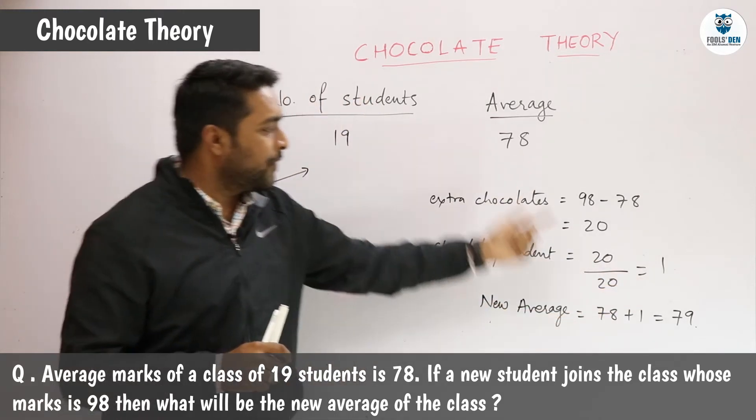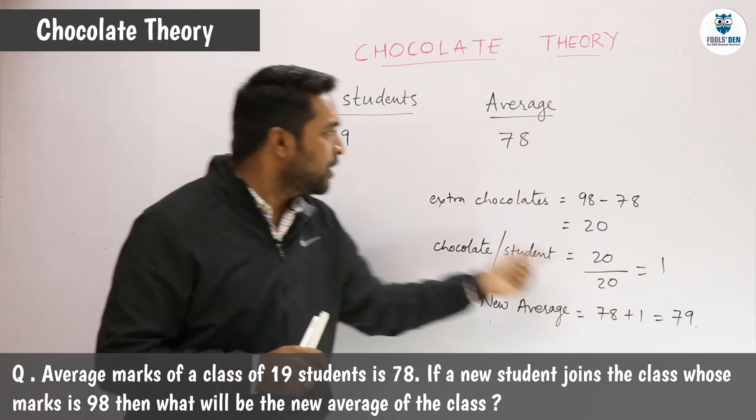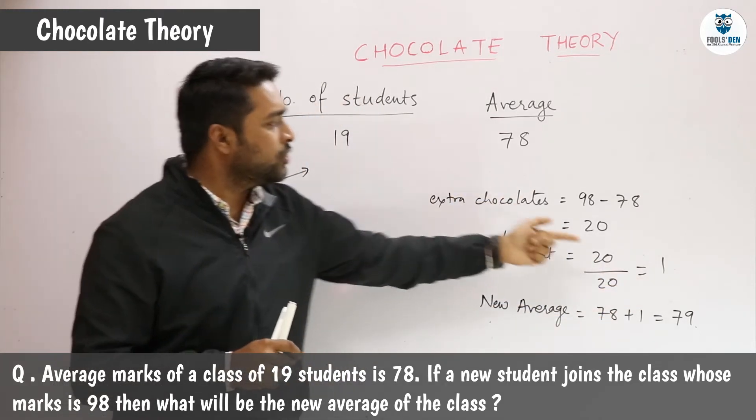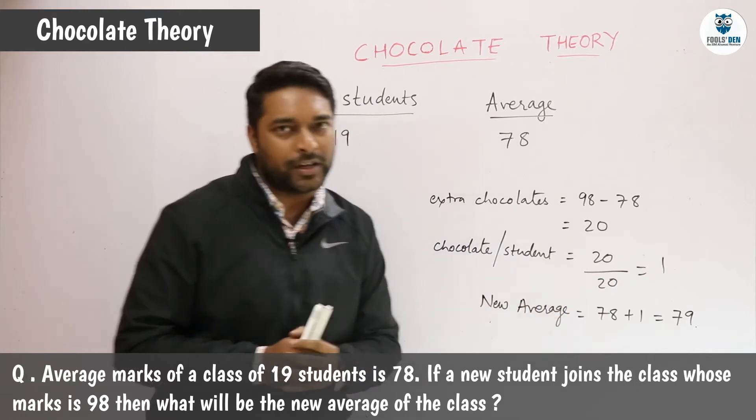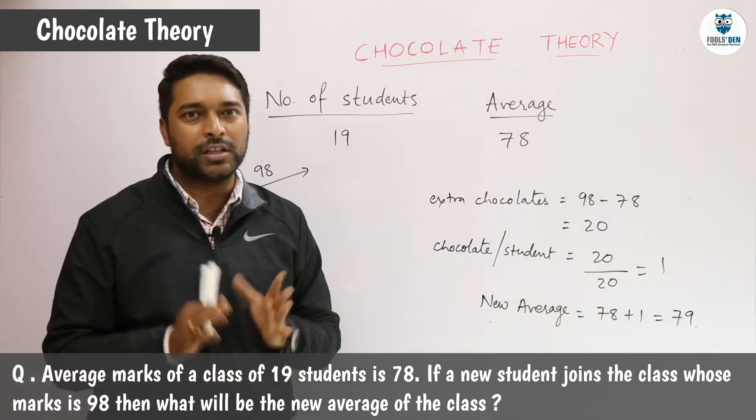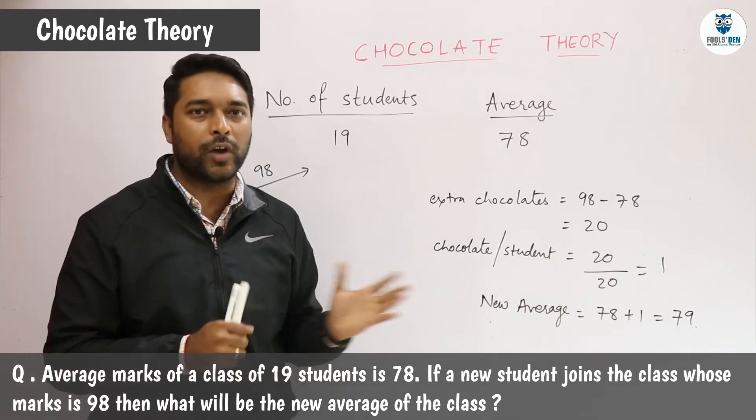Earlier they had 78 chocolates; now they will get 1 chocolate extra, so they will have 79 chocolates. This will be our new average.